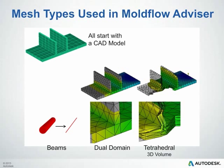This might not be very apparent for Autodesk Moldflow Advisor users, but there is actually a mesh — or a meshing process — that is automated in the background for you. Beams are used in Advisor for cooling channels and feed systems. For your part, you typically have a choice between a dual domain mesh or a tetrahedral mesh, also called 3D. We'll explain this in more detail later and why you might use one over the other.